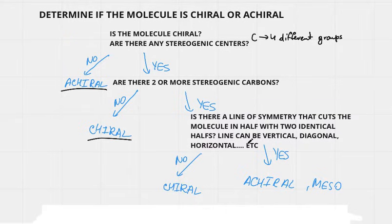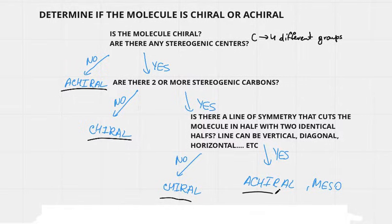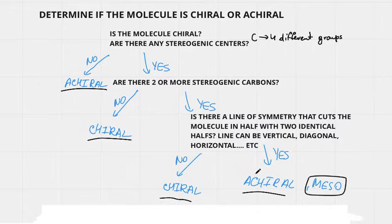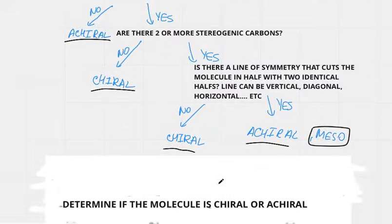If there is no line of symmetry, the molecule is chiral. If the answer is yes, the molecule is achiral — this is a special case called a meso molecule. A meso molecule is one that has stereogenic centers yet is achiral. Let's practice determining whether molecules are chiral or not using the chart.